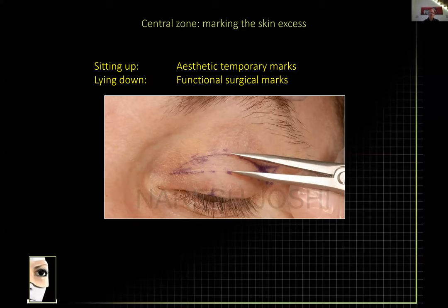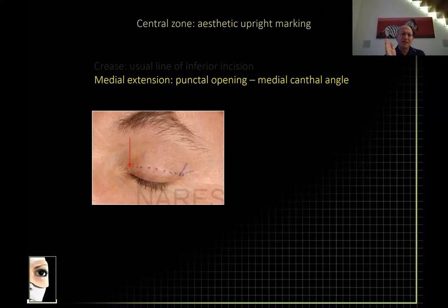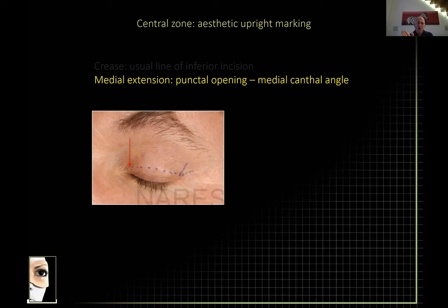My technique is to bring the patient to the operating suite and sit them up — because the room is very well lit — and put temporary marks for the aesthetic marking. Use the crease as your inferior incision point. The medial end sits somewhere near the punctum, slightly beyond, heading toward the medial canthal angle but not beyond — this is where the eyelid curves into the nose. If you extend an incision into that concave area, it will bowstring when it scars.